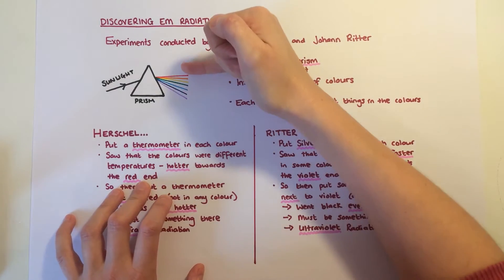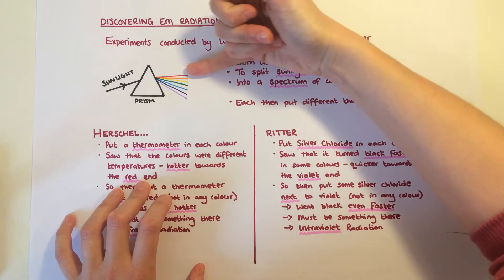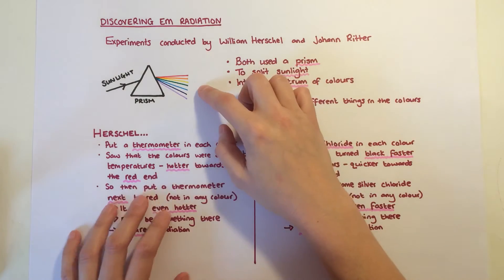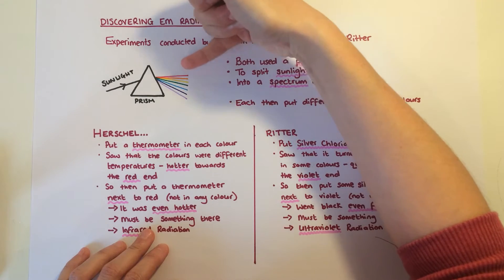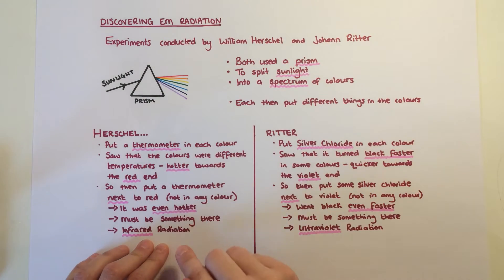He saw that was a pattern, so he decided to put the thermometer here next to the red where there's no light at all. But surprisingly it was even hotter, and that must mean that there's something shining here where we can't see it. And that turned out to be infrared radiation.